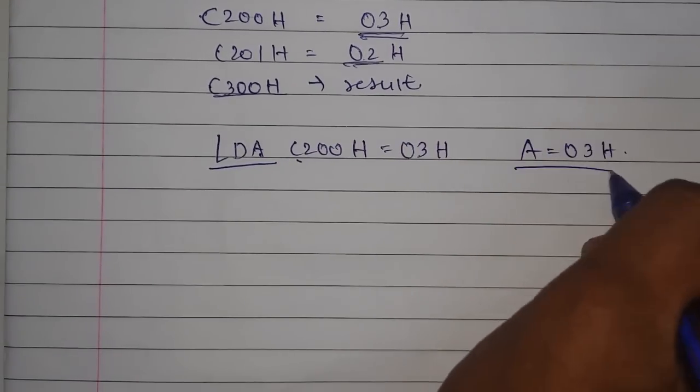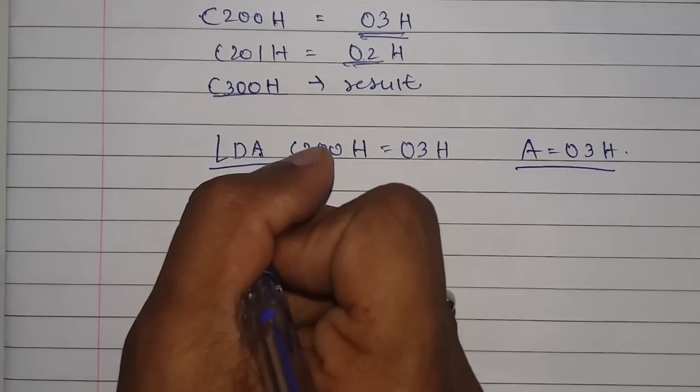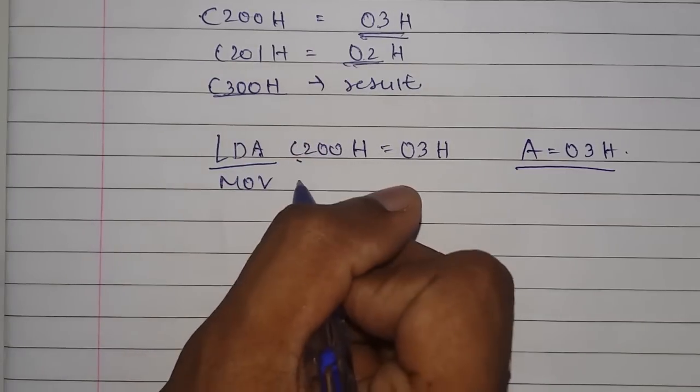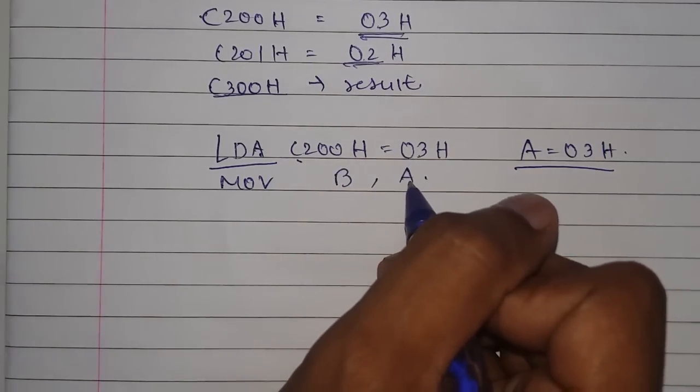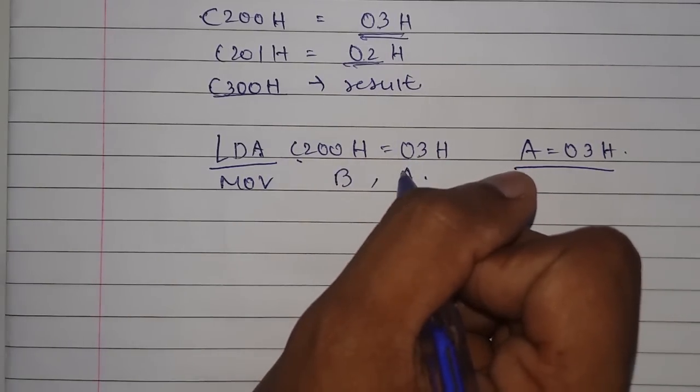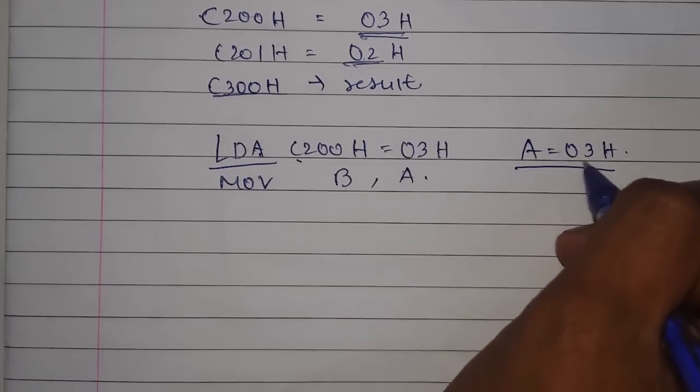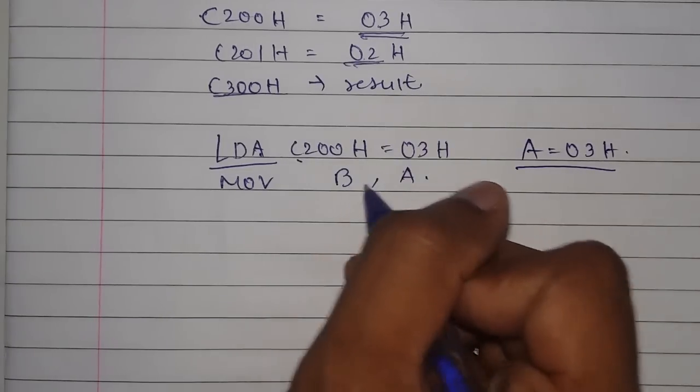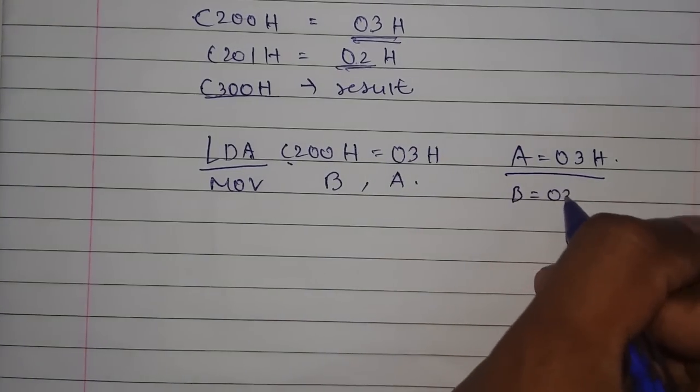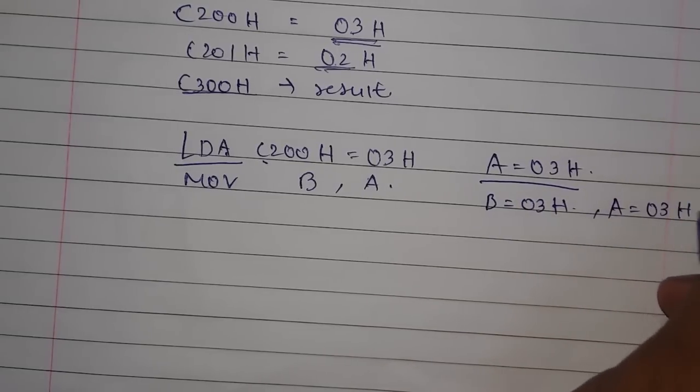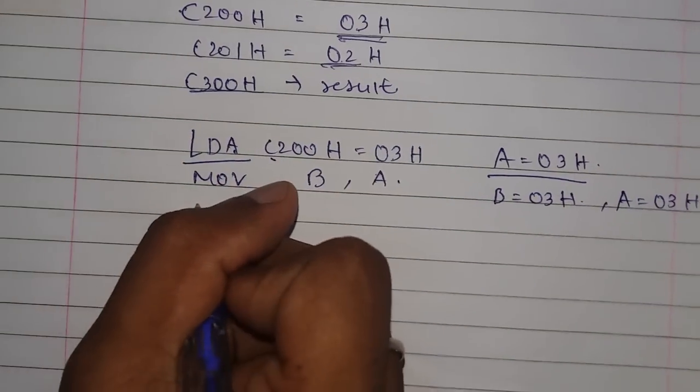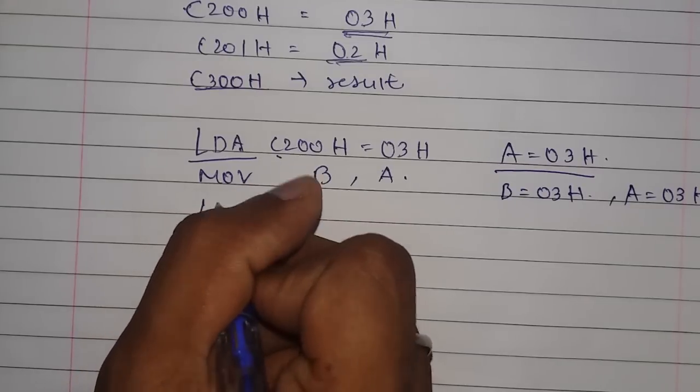Now the second command we will do is MOV B, A. What this will do is that whatever was in 03 will be moved into B. Now B has 03H and A also has 03H, as this is moved into the accumulator.